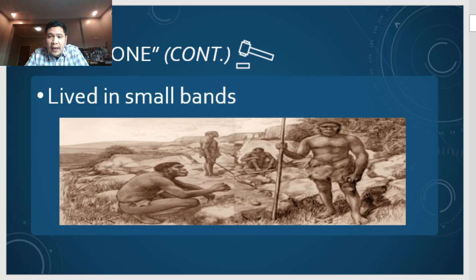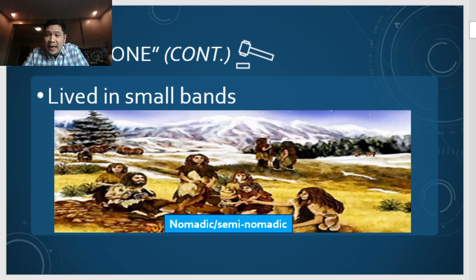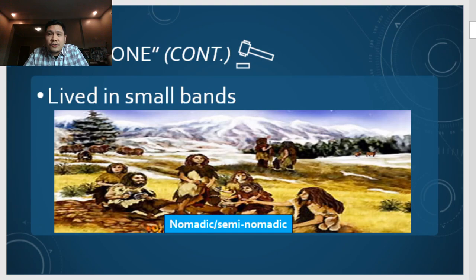They lived in small bands because with more members they could gather more resources while having fewer mouths to feed — very practical. They are also considered as nomadic or semi-nomadic, meaning no permanent address. Just like mentioned earlier, they lived in huts, and once the resources are gone they had to move to a new area or location.